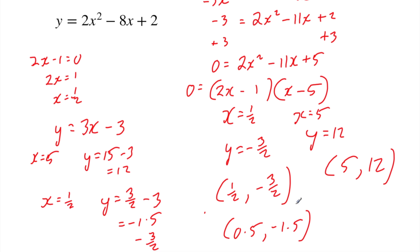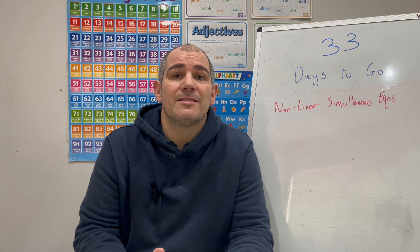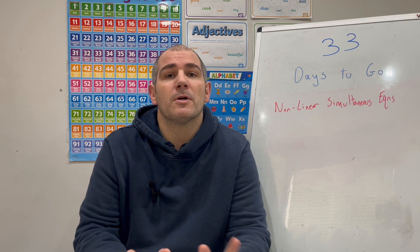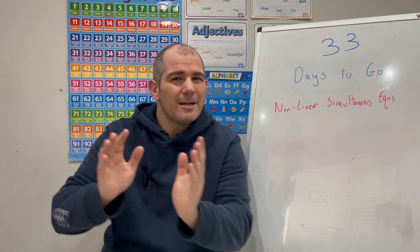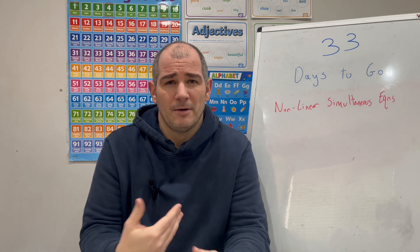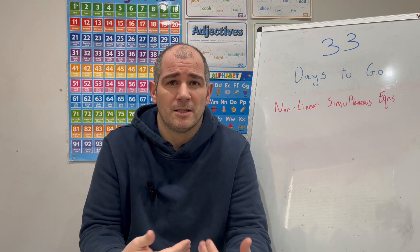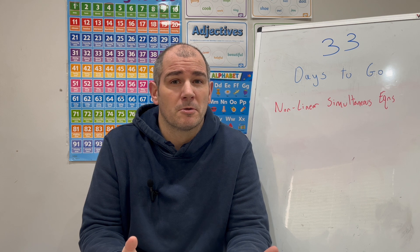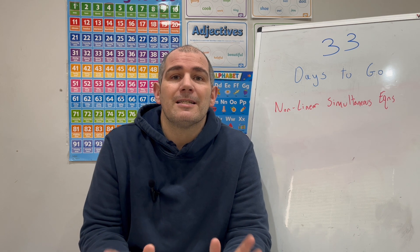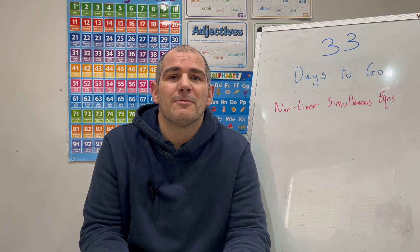And that's it. The coordinates of the points of intersection are (5, 12) and (½, −1.5). In today's video we've looked at non-linear simultaneous equations. It's one of those topics in the second half of the GCSE Maths paper that can be quite tricky, but with practice you can pick up the marks. Well done, and I'll see you tomorrow for 32 days to go into the GCSE Maths paper.